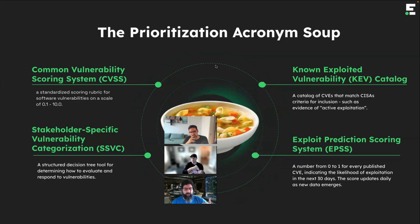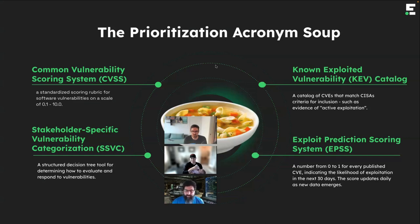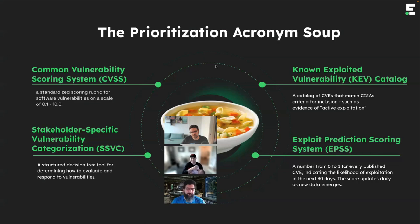Using CVSS and EPSS together gives you impact and likelihood. I can say I want to fix all criticals and highs — anything with a CVSS score above six. But do I really? I have limited time and effort. If I use EPSS too, I can exclude things from that list with less than 5% chance of exploit in the next 30 days — that's what EPSS is trying to predict. But it's telling you this generally across the world, not specifically in your org.